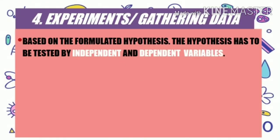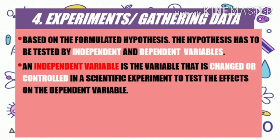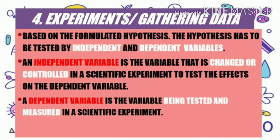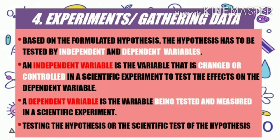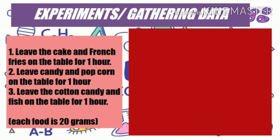Next is the experiment or the gathering of data. This is a scientific test of the hypothesis. Once you have your hypothesis, it must be tested to know if it is correct. The hypothesis has to be tested using independent and dependent variables. The independent variable is the variable being changed or controlled, while the dependent variable is the variable being tested and measured.